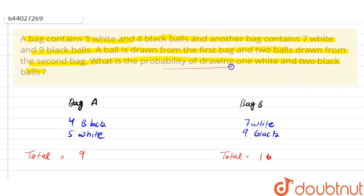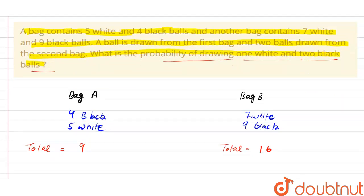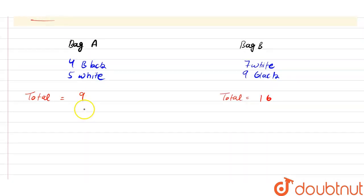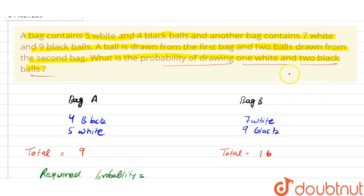We have to find out the probability of drawing 1 white ball and 2 black balls. We have 2 cases in which we can say our required probability. There is an important point - the question did not say from which bag we have to select.